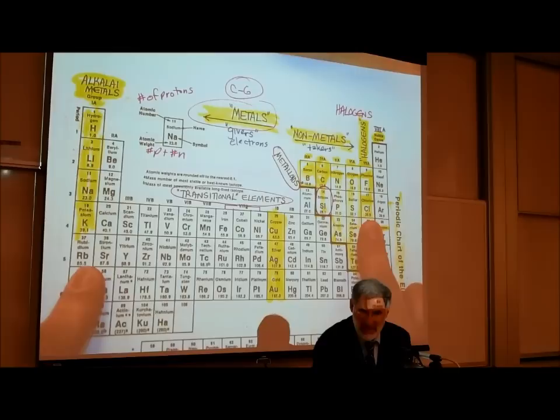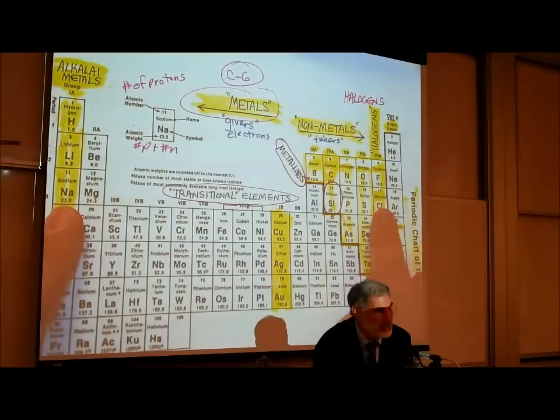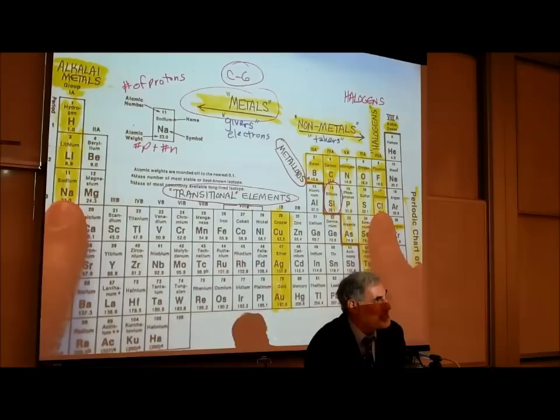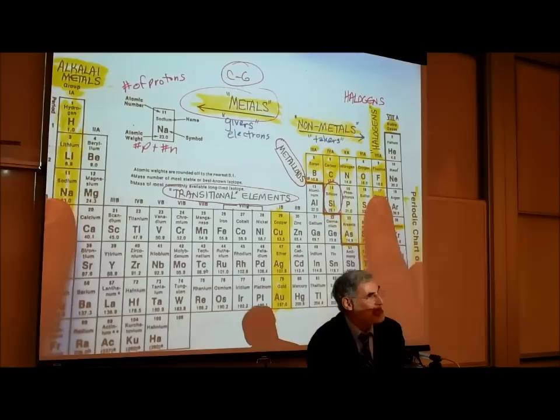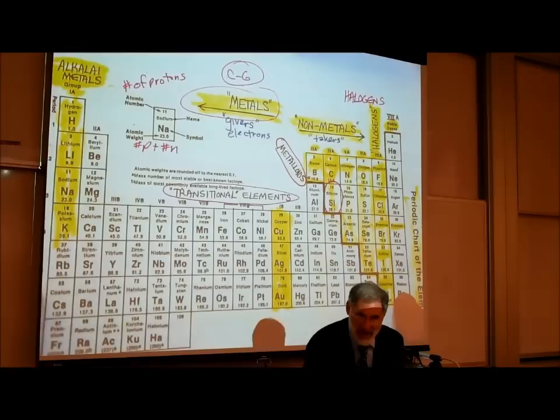Sodium is one of those big givers, and chlorine is one of the big takers. What's going on between them is a relationship between a giver and a taker, and that forms salt or sodium chloride. We tend to see that givers combine with takers — takers need to take from somebody, so they take from somebody who's willing to give.